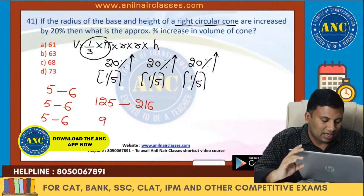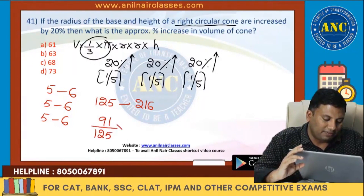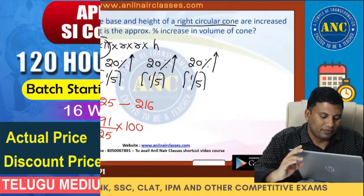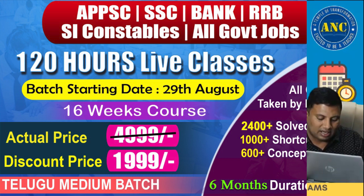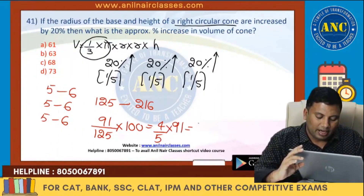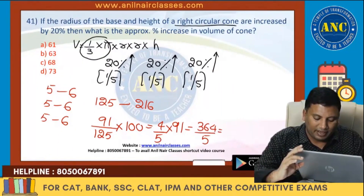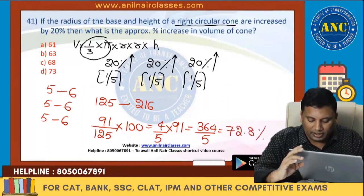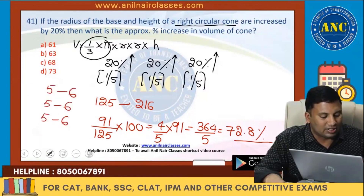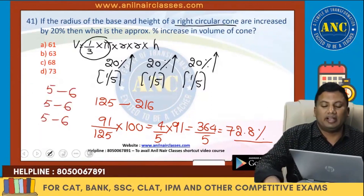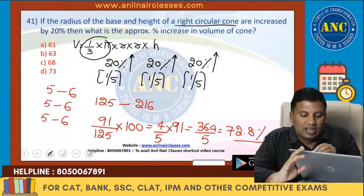The volume increases from 125 to 216, so the increase is 91. Percentage increase = (91/125) × 100. Simplifying: 91 × 4 = 364, divided by 5 = 72.8%. The percentage increase in the volume of the cone is 72.8%.